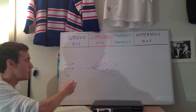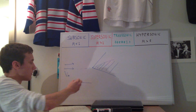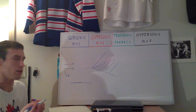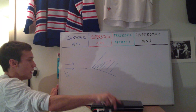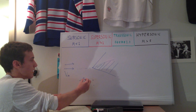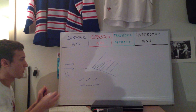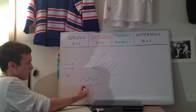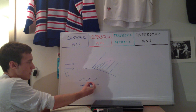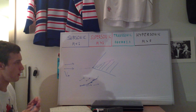A streamline is a quantity where at every single point it is always tangent to the velocity vector in the flow field. So if I define my flow field at discrete points, each with a velocity vector, and I draw a streamline through them, the streamline would be tangent to each velocity vector. As the velocity vector changes from point to point, the streamline continuously adjusts to remain tangent to the velocity vectors throughout the field.